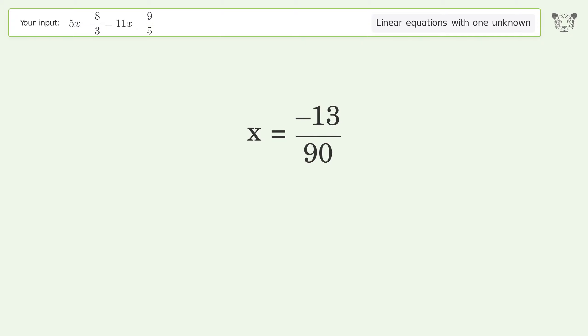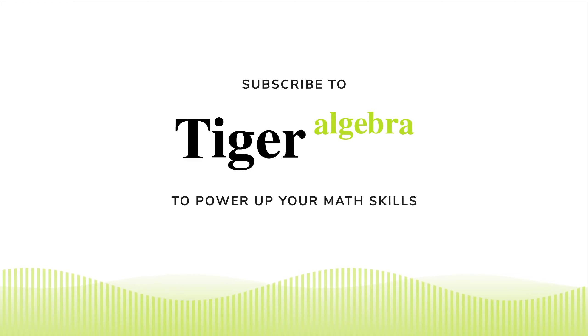And so the final result is x equals negative 13 over 90.